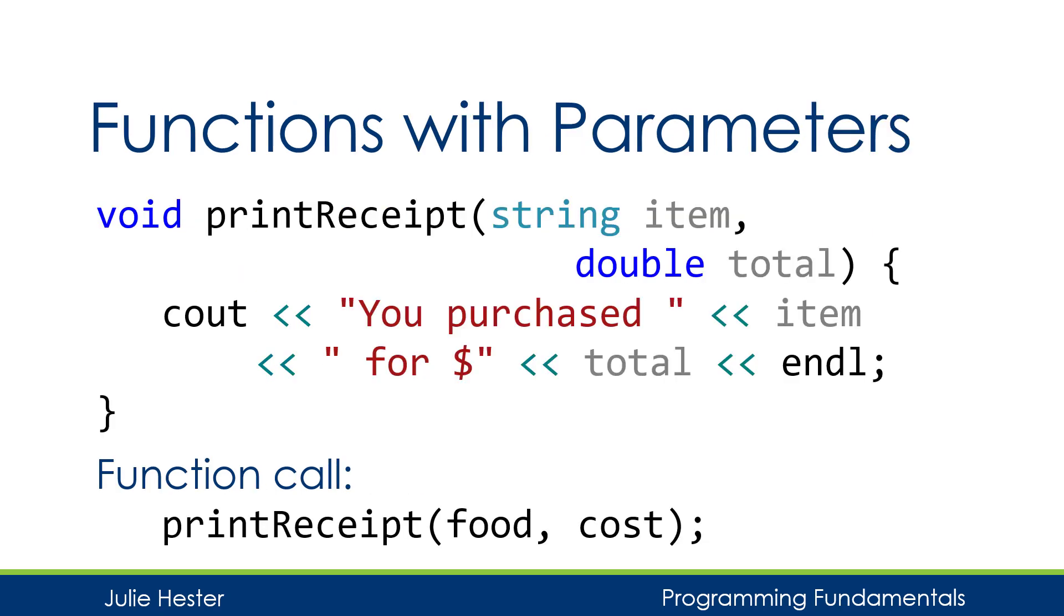So here's a function with two parameters. It has a parameter of a data type string, and it has another parameter of double. So this function, called printReceipt, shows the two parameters by listing them inside the parentheses. And we'll just separate each parameter by a comma, and we can continue to list however many parameters we need. Now when this function is called, whatever value is put as the first value, or the first parameter in the function call, will be copied into item. The second value in our function call will be copied to our variable or parameter double. Once we're inside the function, we can treat item and treat double just like they're any other variable. We just aren't going to define them again, because they've already been defined in our function header.